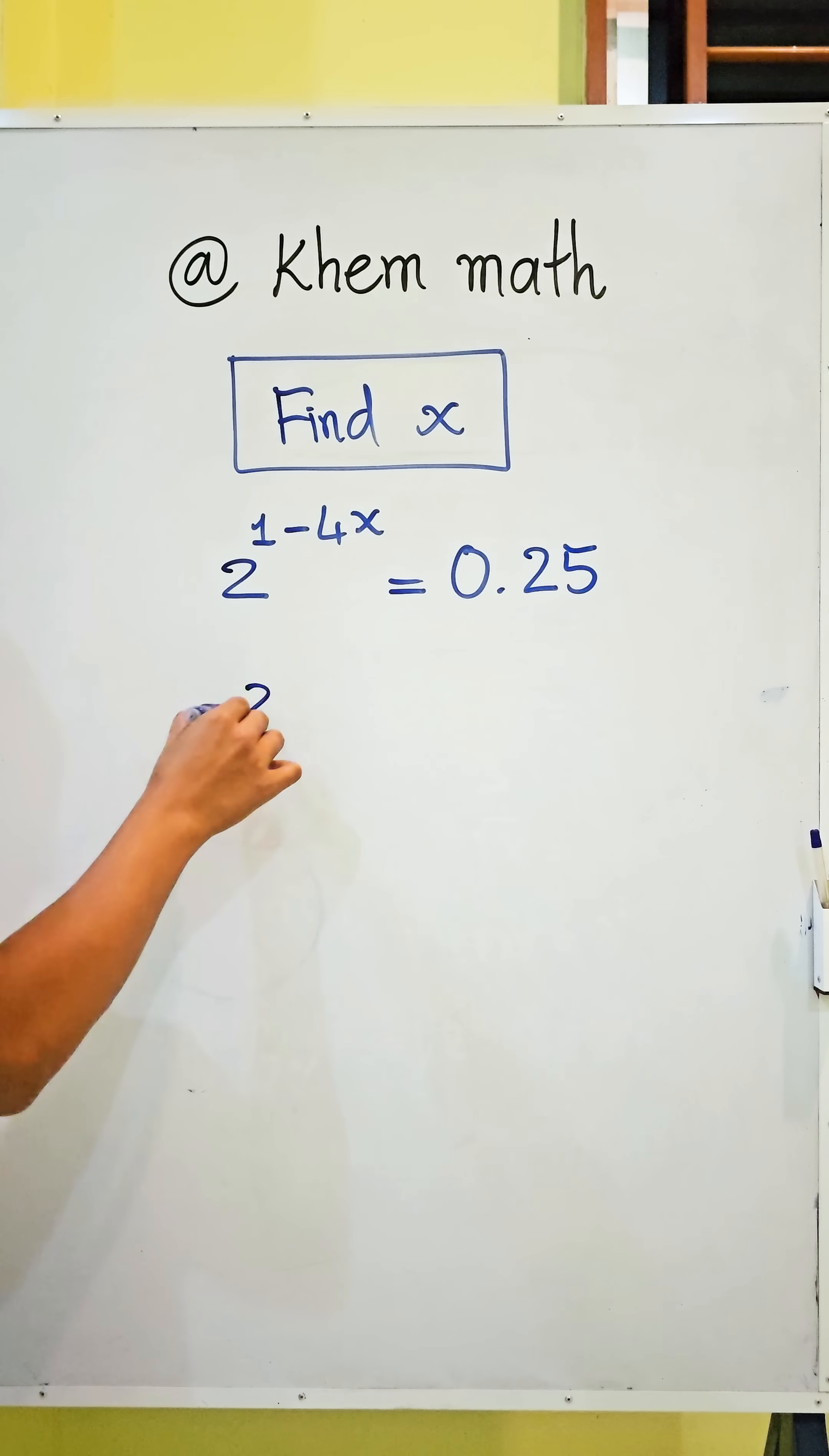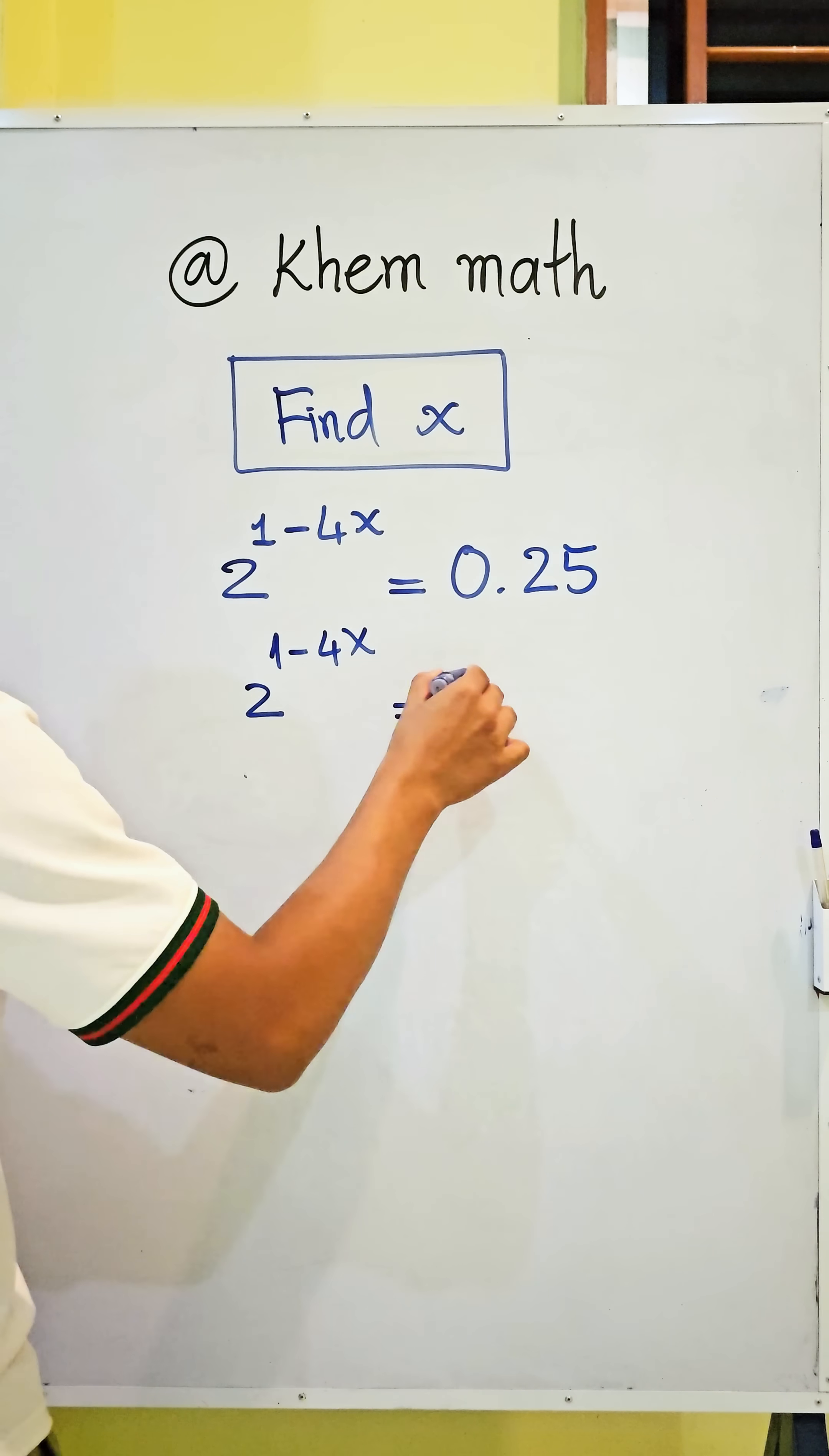So 2 to the power of 1 minus 4x equals 25 divided by 100, which is also 1 divided by 4.